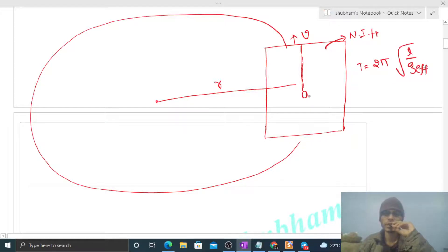Now how to find out g_effective? If we look at this pendulum, then what forces are acting? One is mg, and when we look at this pendulum from a non-inertial frame or rotating frame, in its free body diagram we have to show centrifugal force also, that will be m·v²/r.